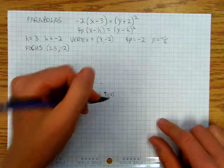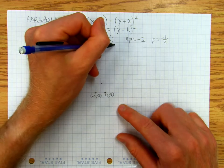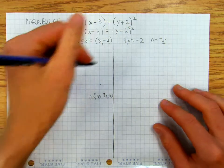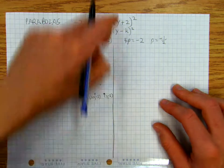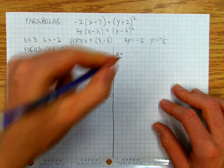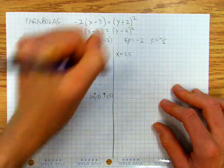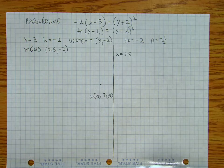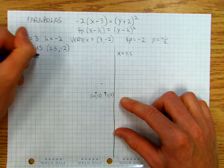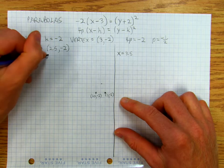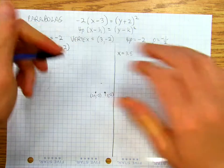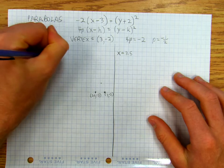And then my directrix is going to be the same distance over on the other side. So there's my directrix, and that's going to be straight up and down, so it's going to be x equals 3.5. So the equation of my directrix is x equals 3.5.